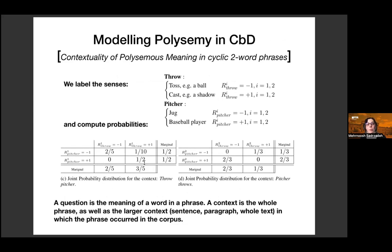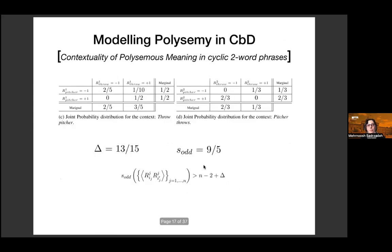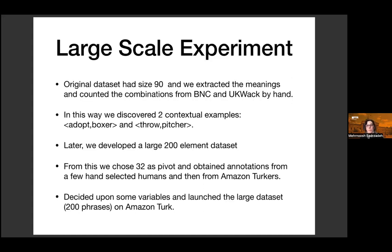We labeled the senses — the casting-shadow meaning and the job meaning for pitcher, the baseball-player meaning — and Daphne and I searched two corpora: the British National Corpus and UKWaC, which is a crawl of all UK web domains in English. We filled in probability tables. For 'pitcher throws,' we found delta is 13/15 and S_odd is 9/5, clearly bigger than 13/15 — so that was one of our contextual examples. The full dataset had 90 ambiguous phrases, and boxer and pitcher were the only two contextual examples.